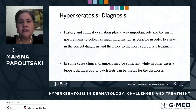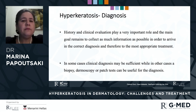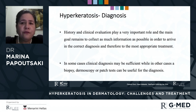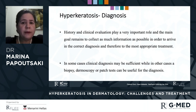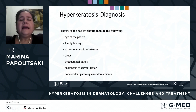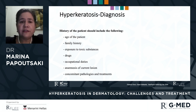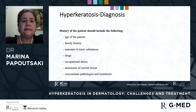For diagnosis, it is important to obtain a very detailed history. History and clinical evaluation play a very important role, and the main goal is to collect as much information as possible to arrive at a correct diagnosis and the most appropriate treatment. In some cases clinical diagnosis may be sufficient, while in others a biopsy, dermoscopy, or patch test can be useful. Patient history should include age, family history, exposure to toxic substances or drugs, occupational duties, analysis of current lesions, and concomitant diseases and treatments.